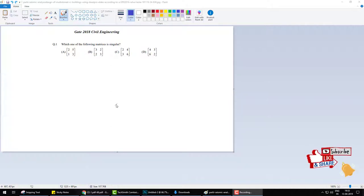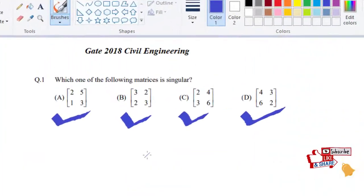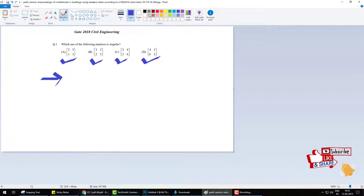Now this video in Hindi language. GATE 2018 Civil Engineering me question: which one of the following matrix is singular matrix? Four options hai A, B, C, D. First condition of singular matrix yeh hai ki matrix square honi chahiye. Yeh char matrices already square matrices hai. Second condition hai ki agar is matrix ka determinant 0 hai, then the matrix is singular.